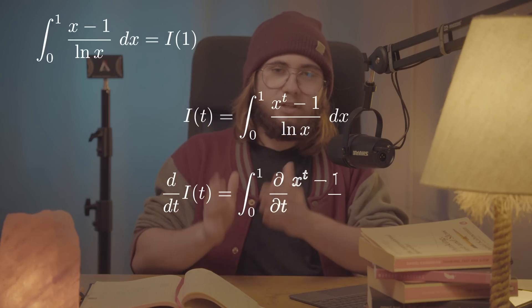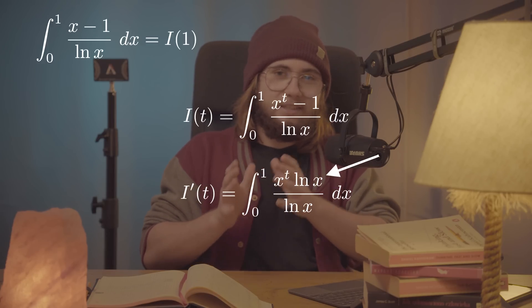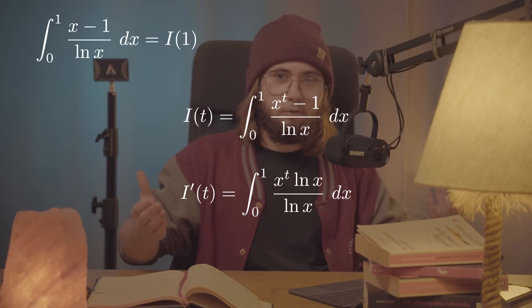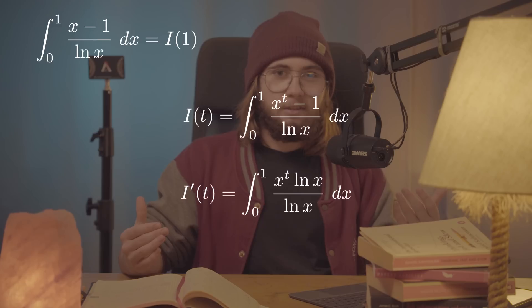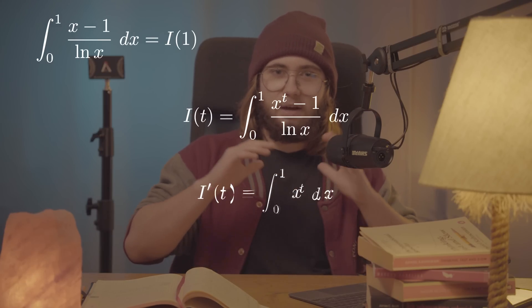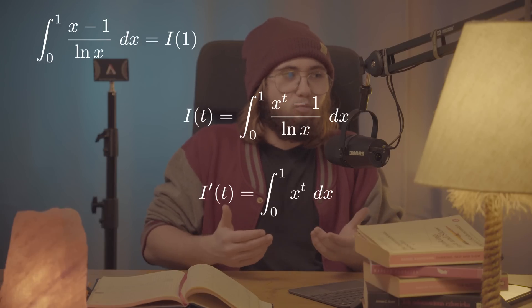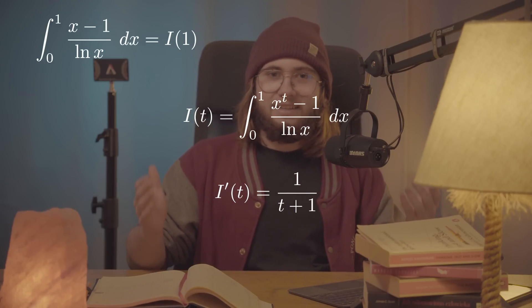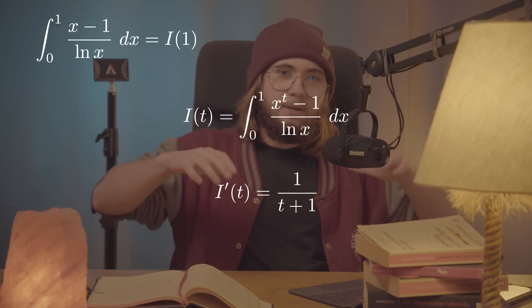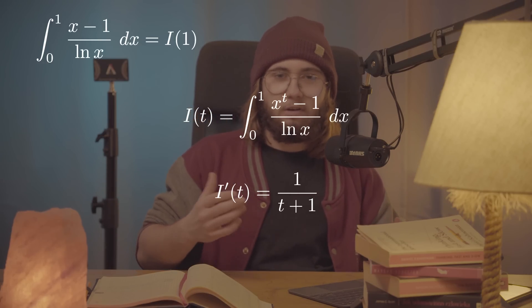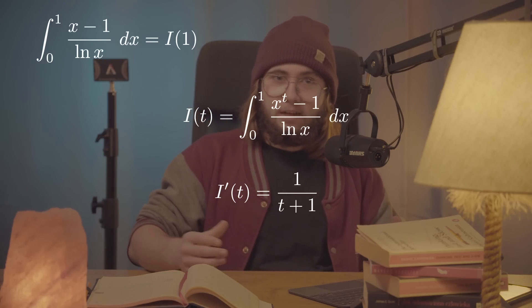Now, if I differentiate both sides with respect to the parameter T, another natural log of x pops out in the integral, because x is just a constant with respect to T. Those logs cancel each other out nicely, and this resulting integral is anything but hard. I evaluated it getting that my derivative of the function I of T is 1 over T plus 1. Quite lovely.